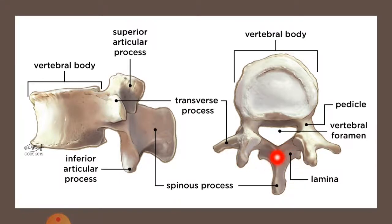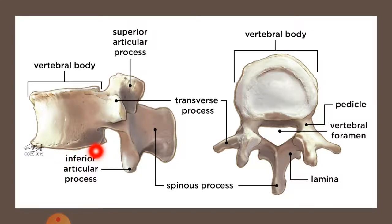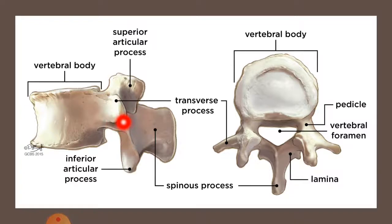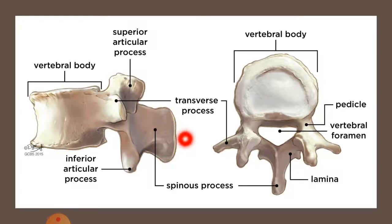When the two laminae join together, another process arises from that point called the spinous process. Looking at the features of the vertebra from the side, you can again appreciate the vertebral body and the transverse process arising from the point where the pedicle meets the lamina. The spinous process is something you can feel throughout the length of your spine on the skin, arising where the two laminae join.